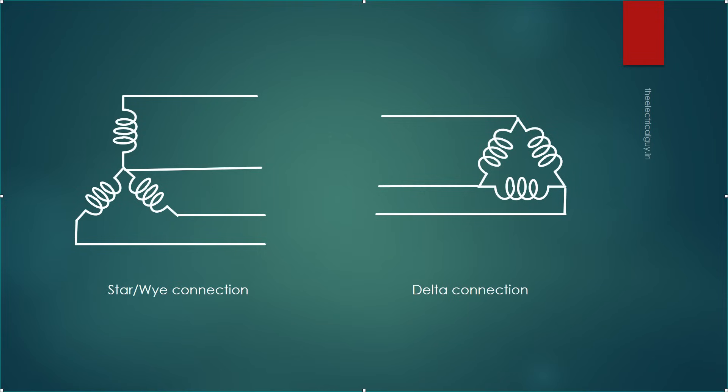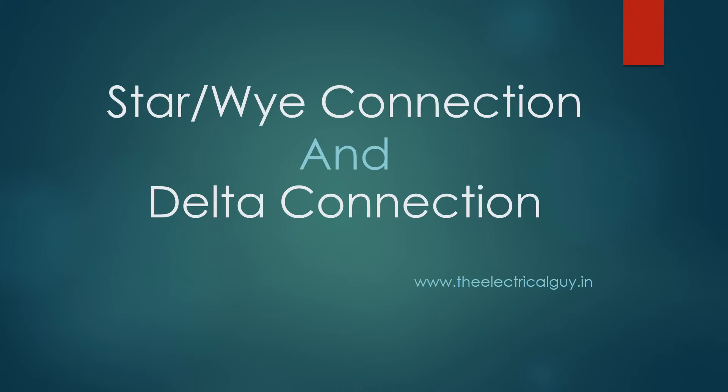Star or Y connection and delta connection are the two different methods used for connecting a three-phase system. In this video, we will learn in detail about star and delta connection. We will also know the voltage and current relationship in both connections and where these connections are used.